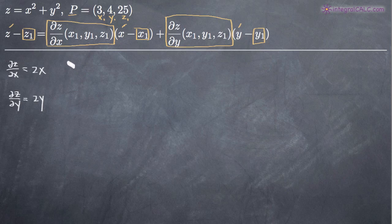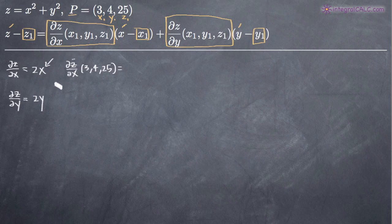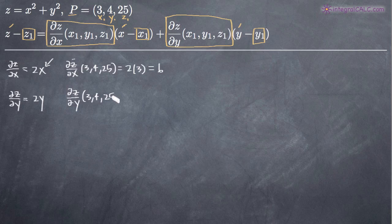Now we need to evaluate the partial derivatives at the point P, which is (3, 4, 25). The partial derivative of z with respect to x at point P: we only have an x variable, so we plug in 3 for x and get 2 times 3, which equals 6. Similarly, the partial derivative of z with respect to y at point P: we plug in 4 for y and get 2 times 4, which equals 8.